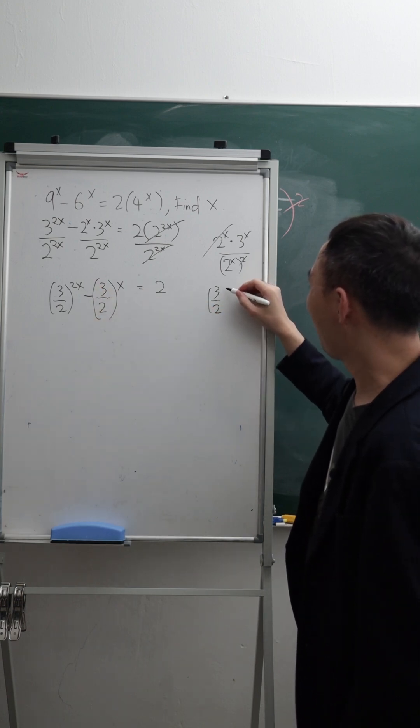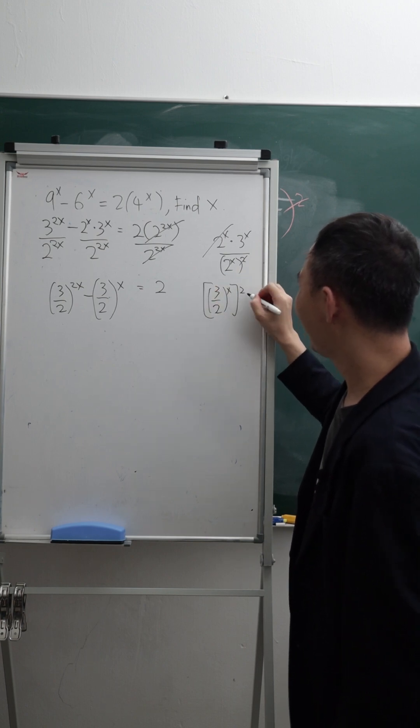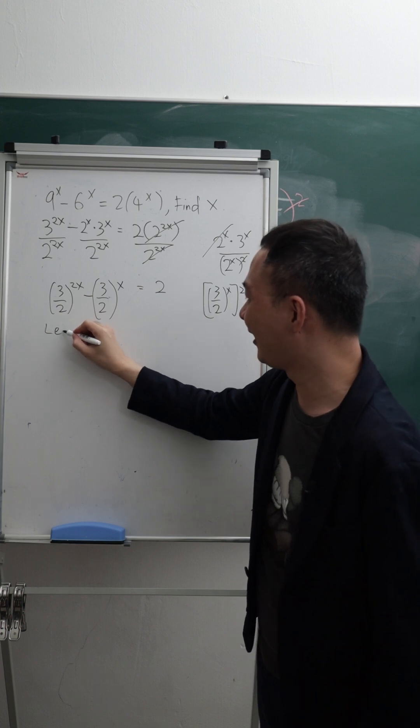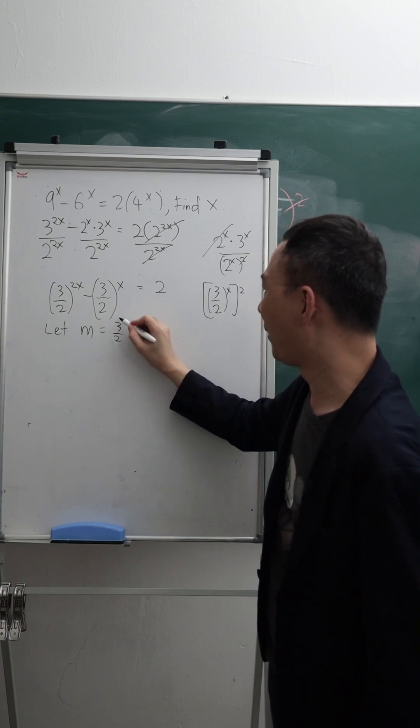It's the same thing. So right now what I want to do is I want to let m become 3 over 2 power of x.